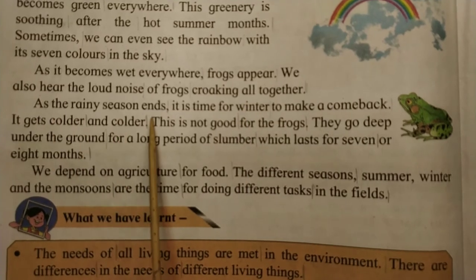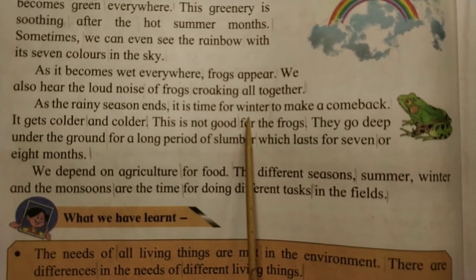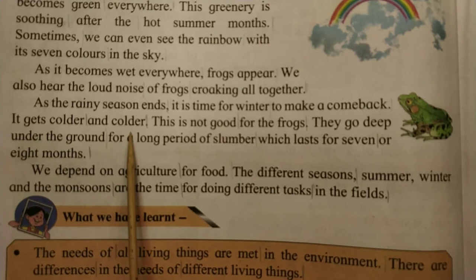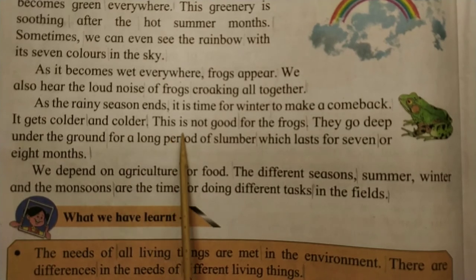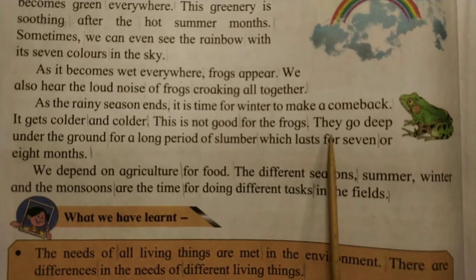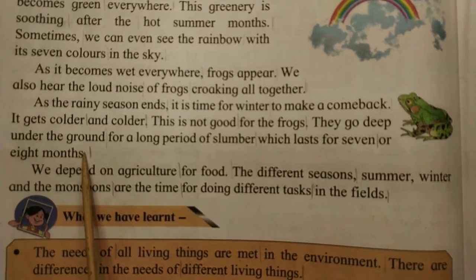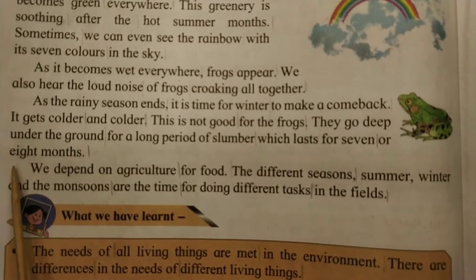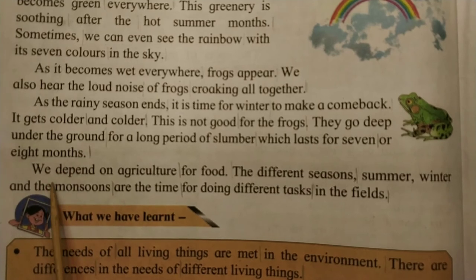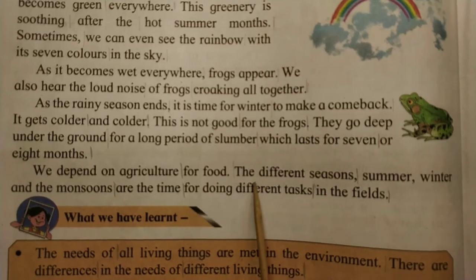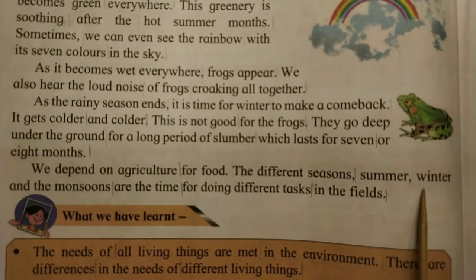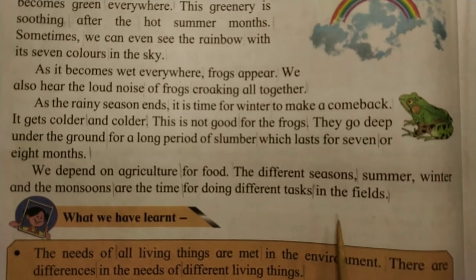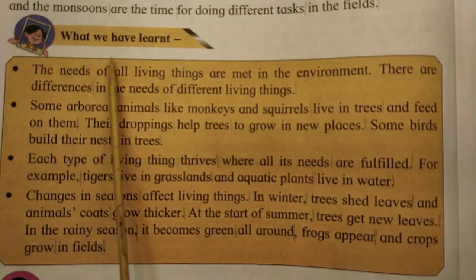As the rainy season ends, it is time for winter to make a comeback. It gets colder and colder, which is not good for the frogs. They go deep underground for a long period of slumber which lasts seven or eight months. We depend on agriculture for food. The different seasons — summer, winter and the monsoons — are the time for doing different tasks in the fields.